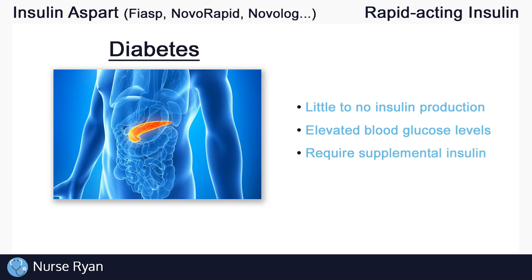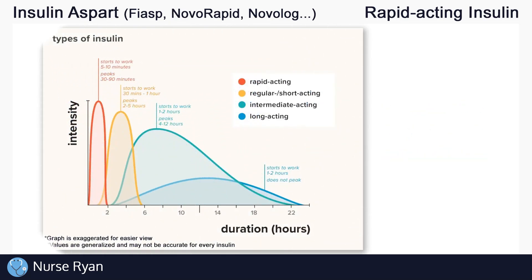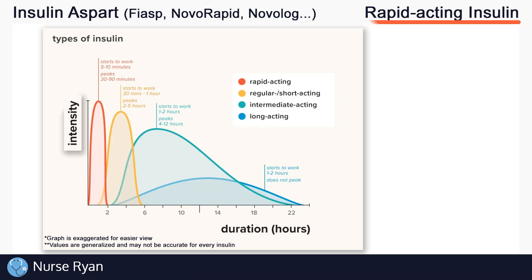Now let's get into the different types of insulin. There are basically four main types: rapid acting, short acting, intermediate acting, and long acting. For example, insulin aspart is a rapid acting insulin. Now let's see what sets these different insulins apart from one another with the help of this chart.